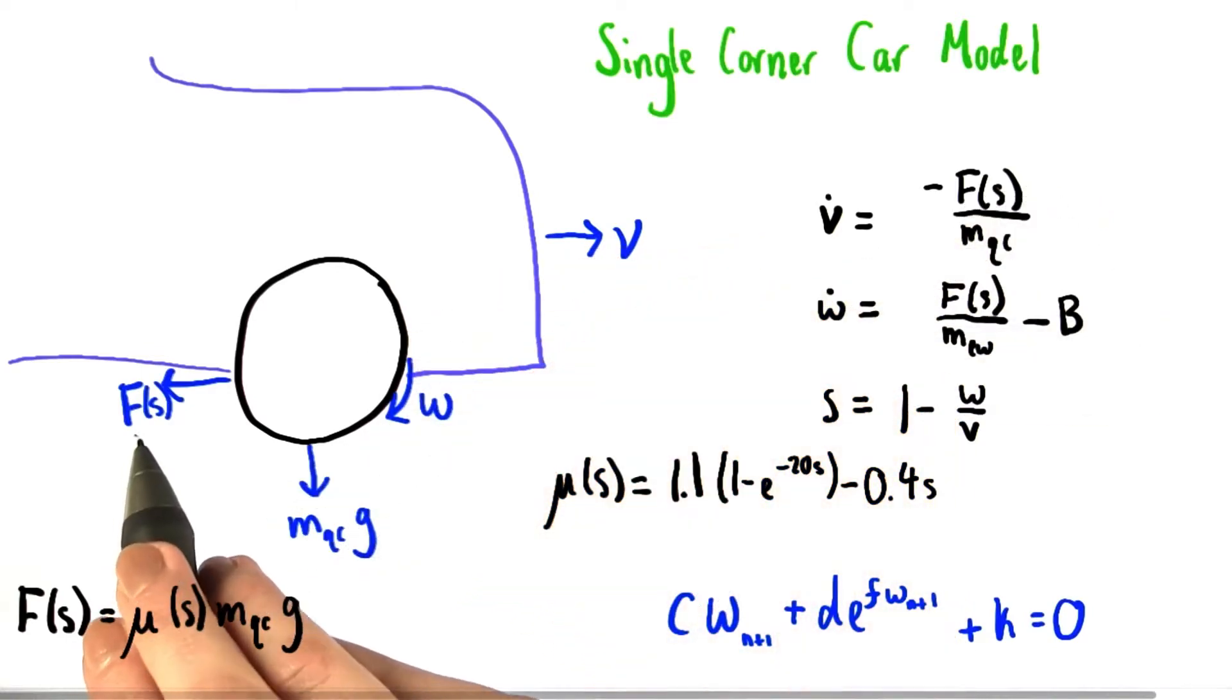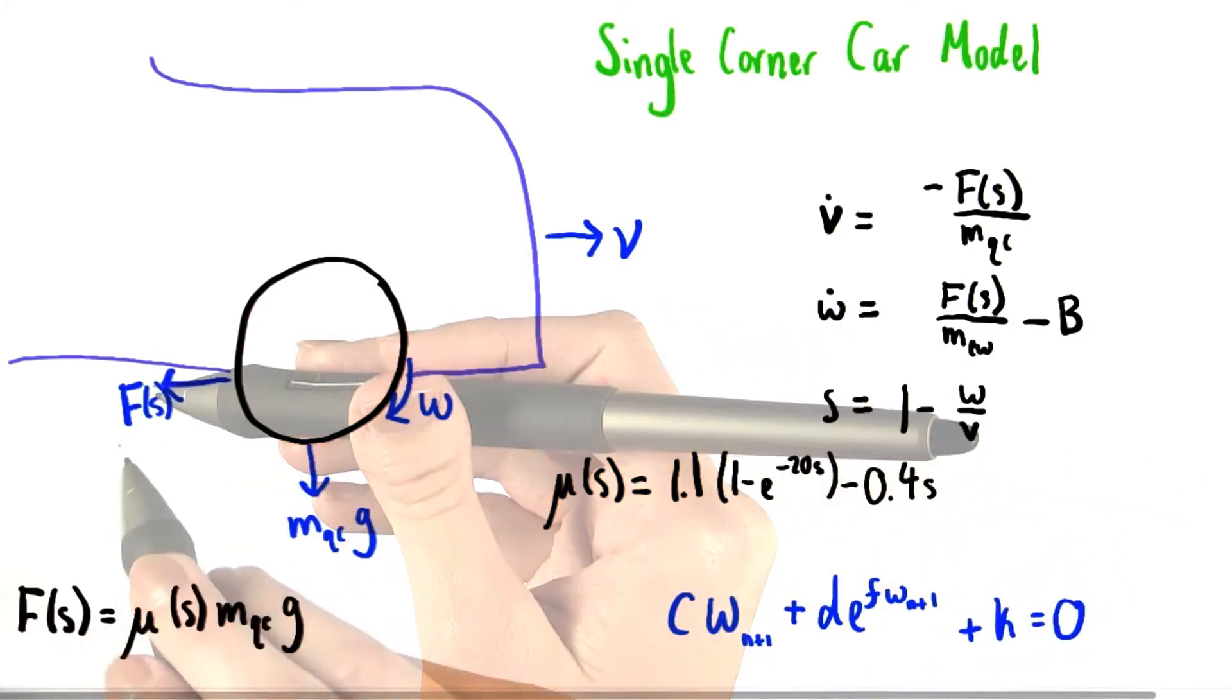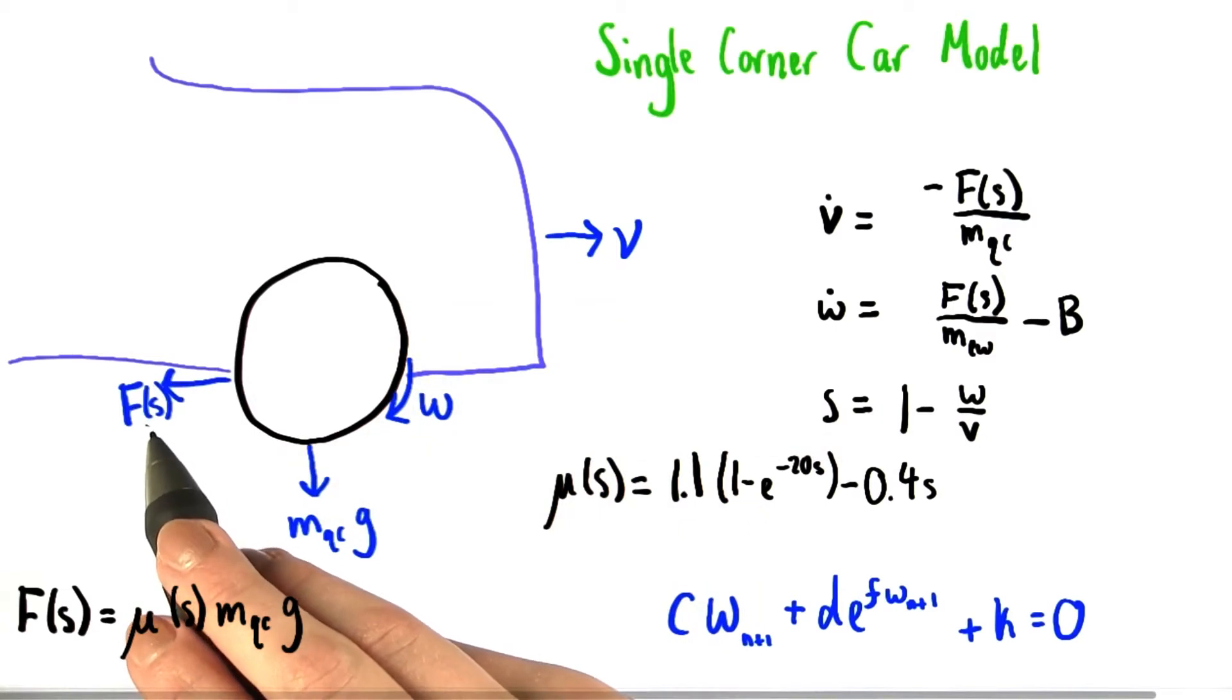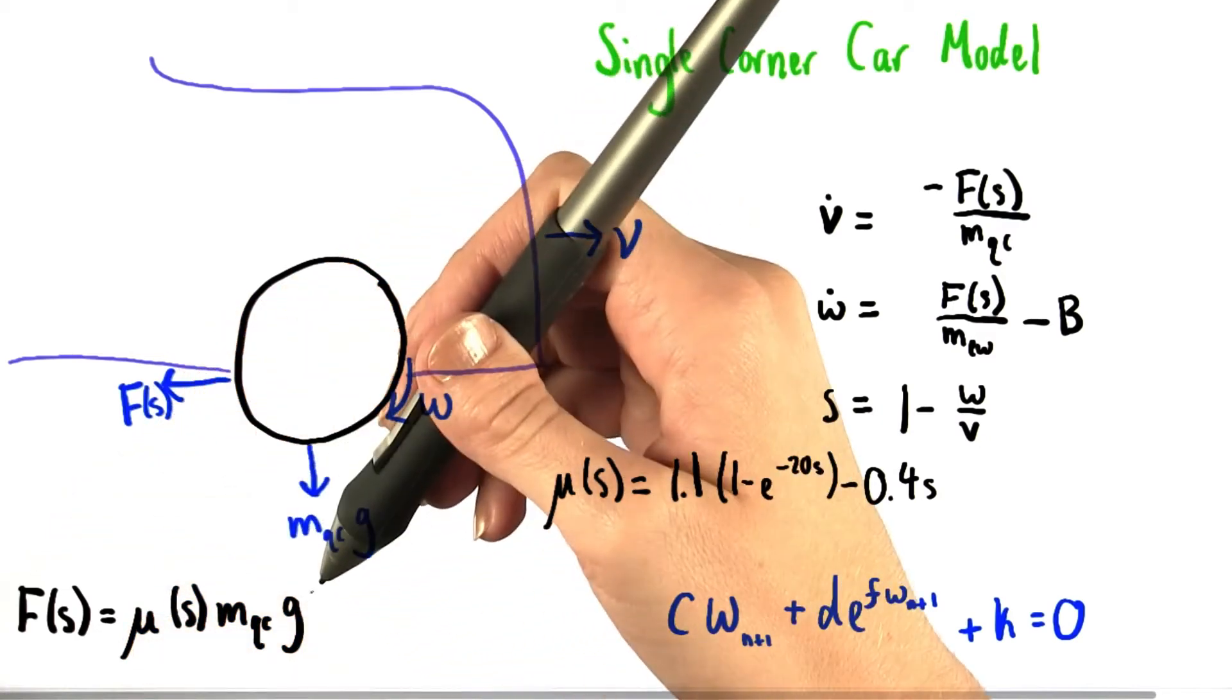F here represents friction, or the force of friction that is acting in this direction against the motion of the car. The force of friction is a function of S, which stands for wheel slip. We can write out the equation for the force of friction just like this.